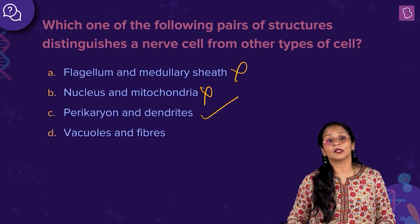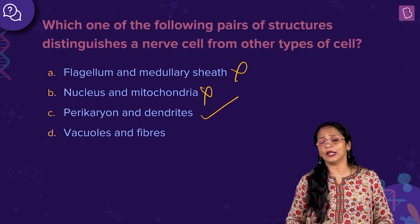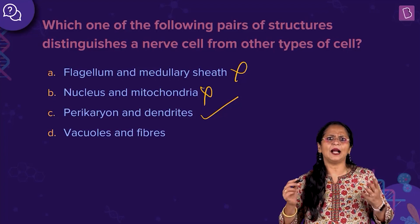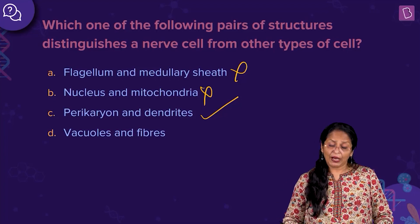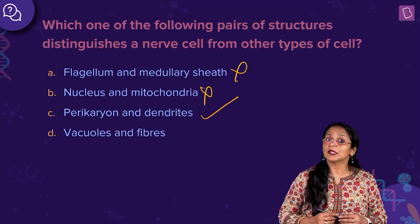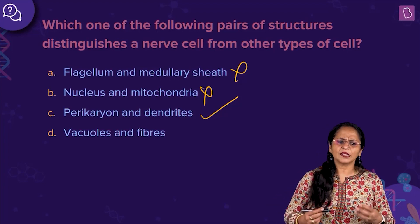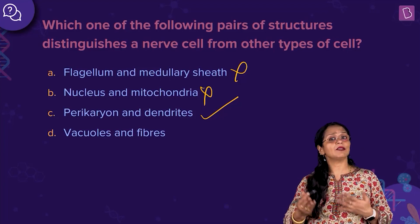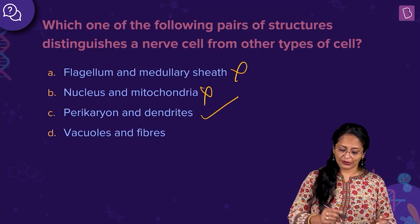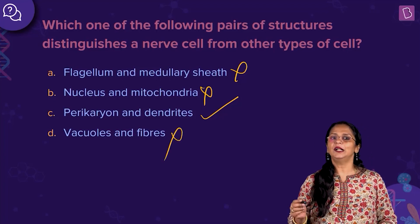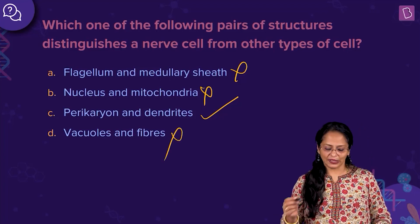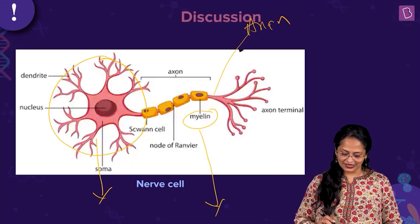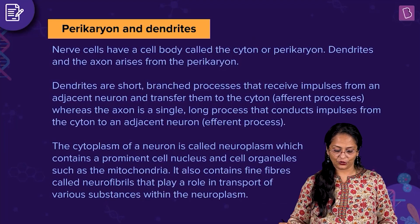Option D: vacuoles and fibers. Vacuoles you commonly find in plant and animal cells — they could be small or absent. Fibers — microfibrils make up the cytoskeleton; in neurons you have neurofibrils — but this does not distinguish the neuron from other cells. It is the pericaryon and dendrites that distinguish it. This is the diagram of the nerve cell or neuron.